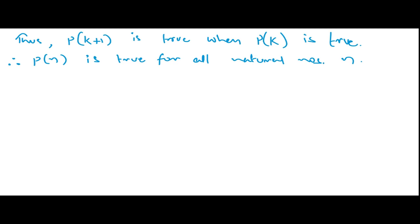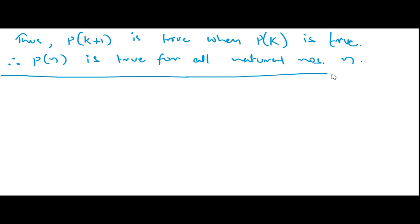So first you check for n = 1, then you assume it is true for n = k (let us suppose it is true), and after that you check for k+1 whether it is true or not. Now let us see another problem.